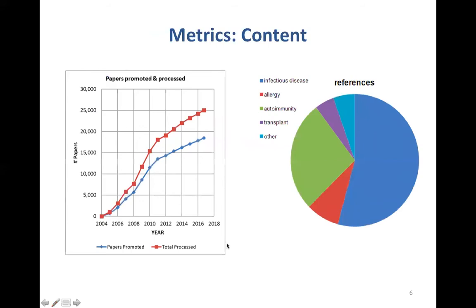We have most of the data from the literature. When we started, there was an enormous backlog covering everything from the beginning of PubMed until now, so it took many years to catch up. Now we're primarily adding new data. This pie graph shows that most of the data we have is infectious disease, with autoimmunity being the second most common. We're entirely at the mercy of what authors publish — this reflects what is in the literature, and that's essentially where we get our data from.